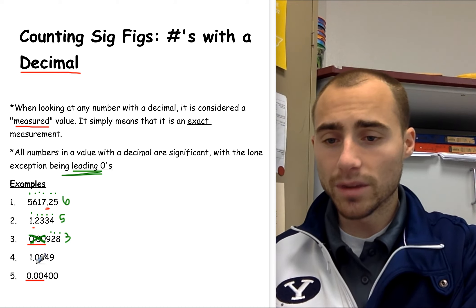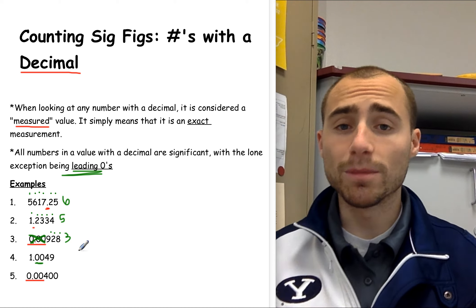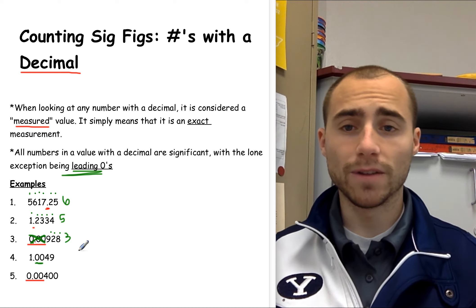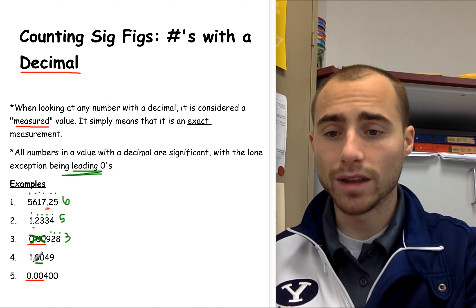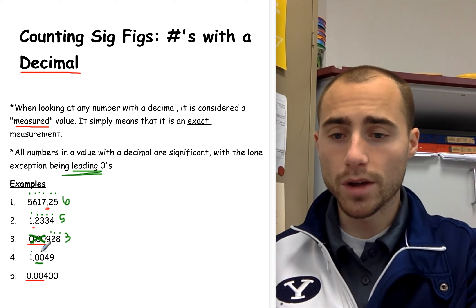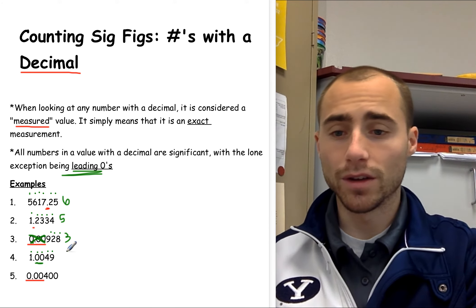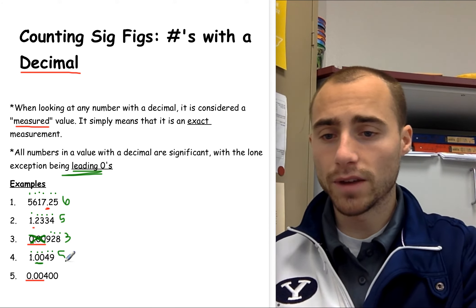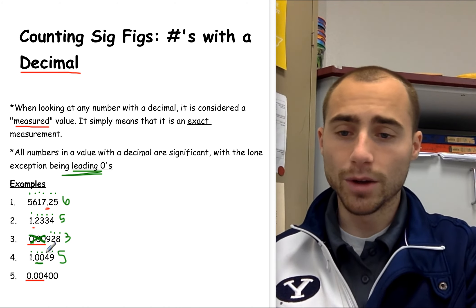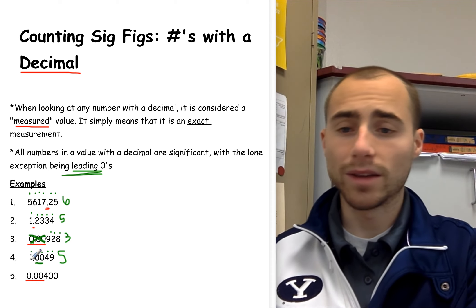Next, this number has some zeros — but are they leading? Are they at the beginning of the number? No, they are not. That means they are significant. The only thing we don't count are leading zeros. So in 1.0049, we will have one, two, three, four, five significant figures — five significant figures because these zeros are sandwiched in the middle, and as long as they aren't leading, we still count them as significant.